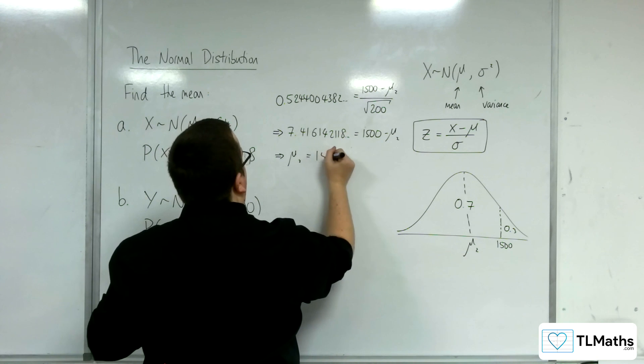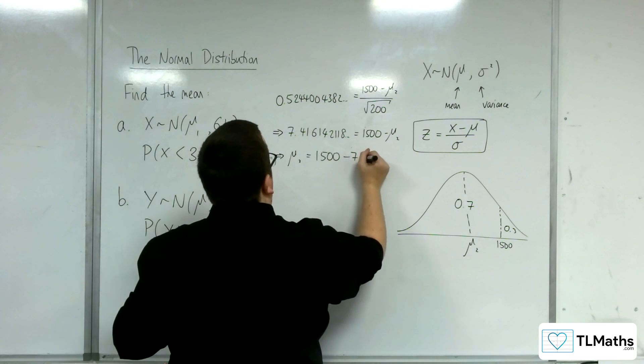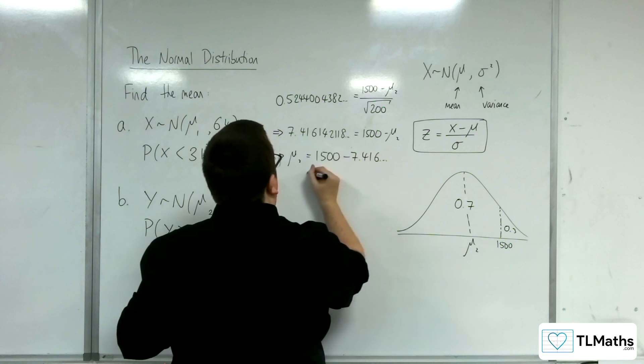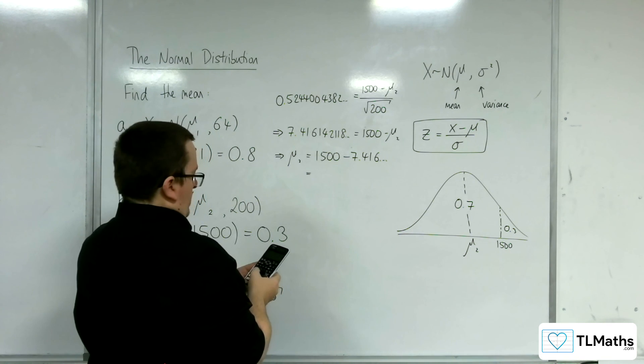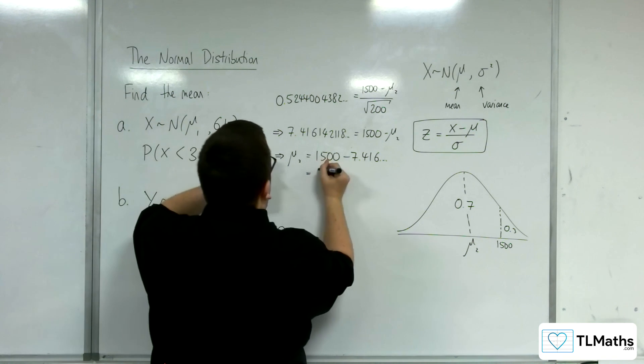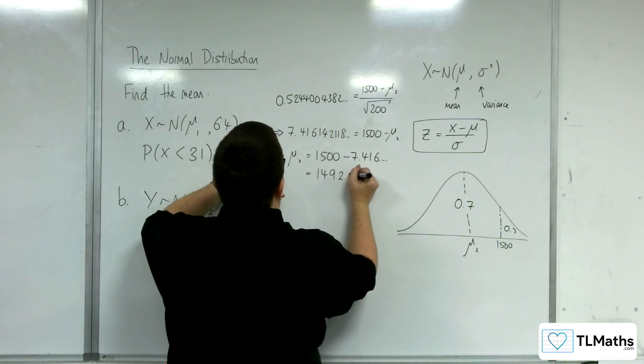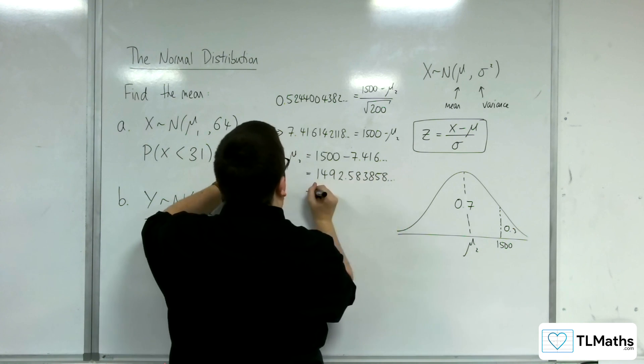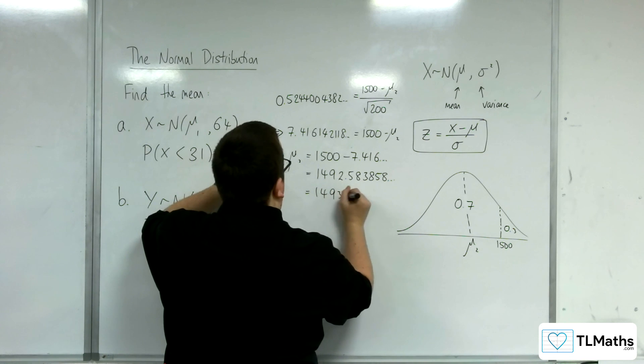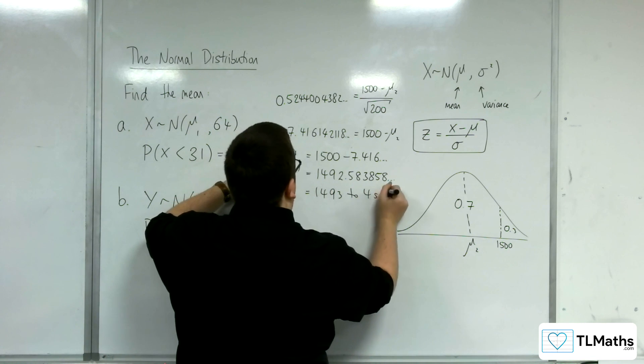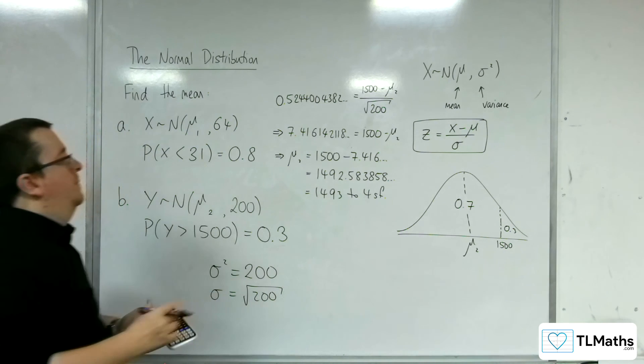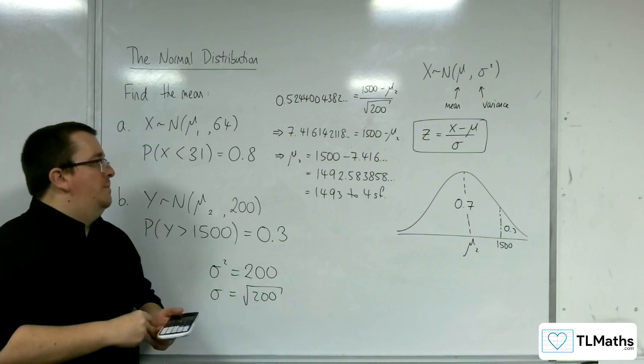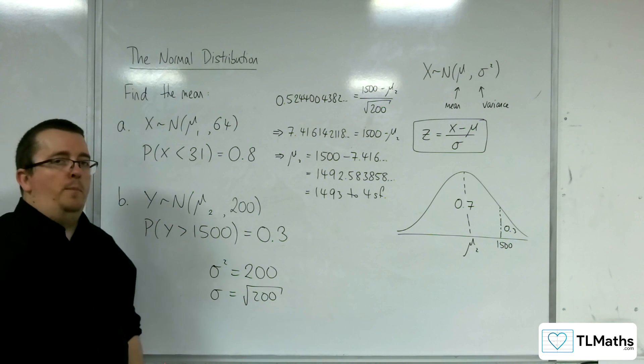If I subtract that from both sides, add mu2 to both sides, it's 1500 take away the 7.416, etc. And we get 1492.583858. So 1493 to 4 sig fig. And so that is the mean of the distribution for part B.